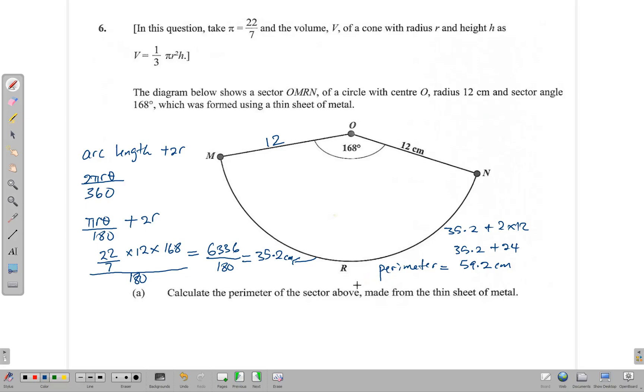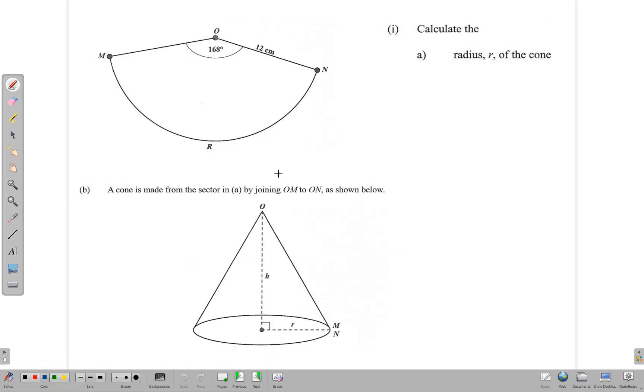All right, we can move on to the other part of the question. Here we're told that this sector is bent to form a cone. When we fold a sector to make it into a cone, the radius of the circle becomes the slant height. So this side here is 12 centimeters, and we're asked to find the radius of the cone.